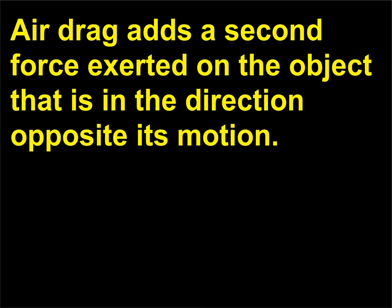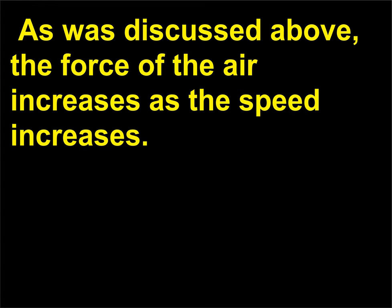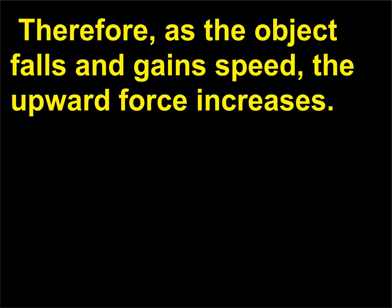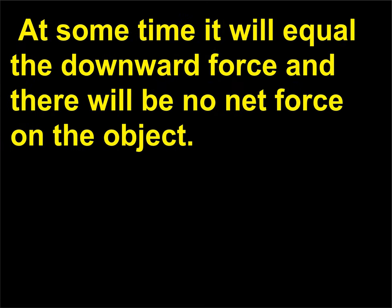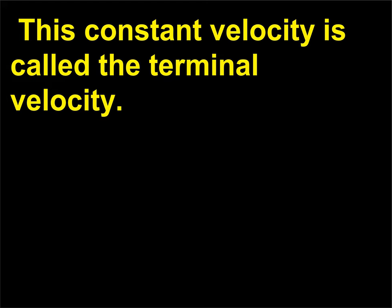Air drag adds a second force exerted on the object in the direction opposite its motion. The net force is the difference between the downward force of gravity and the upward force of air. As the object falls and gains speed, the upward force increases. At some point it will equal the downward force and there will be no net force on the object, so according to Newton's first law, the object's speed will become constant. This constant velocity is called the terminal velocity.